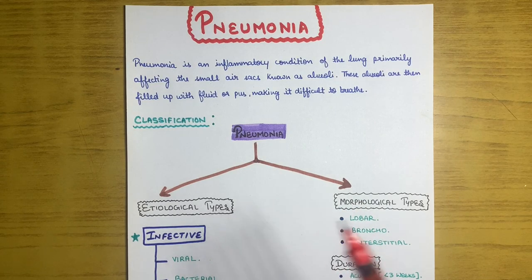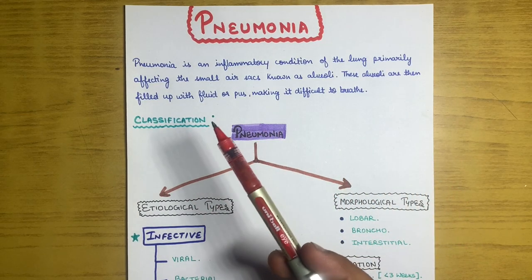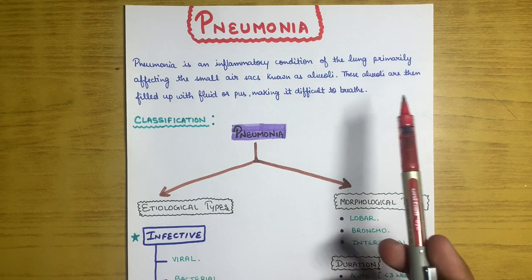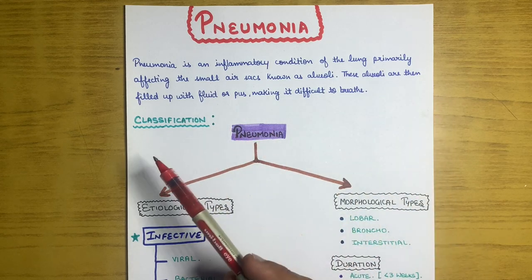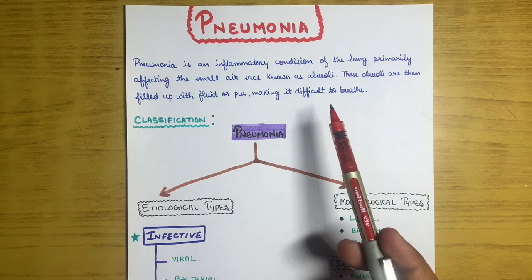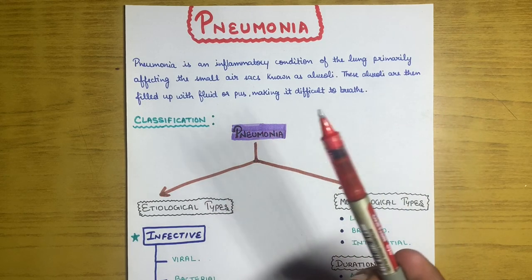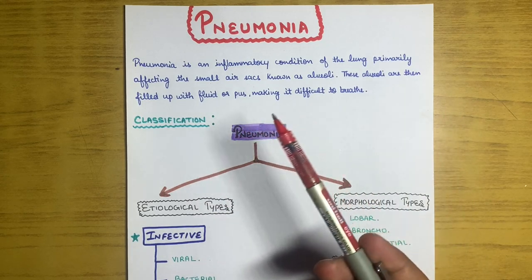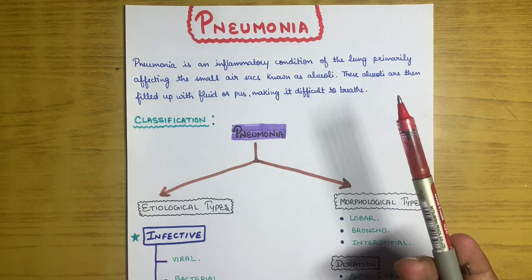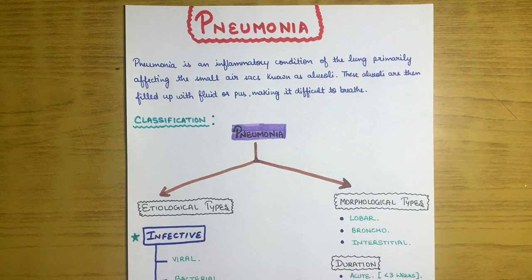Hello everyone. In this video I am going to tell you about pneumonia. Pneumonia is an inflammatory condition of the lung primarily affecting the small air sacs known as alveoli. These alveoli are then filled up with fluid, pus, or even blood in some cases, making it difficult to breathe.